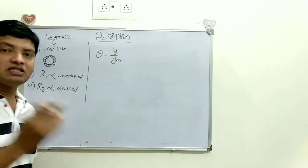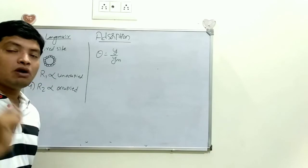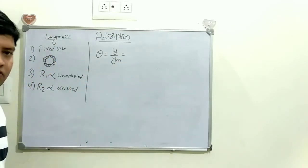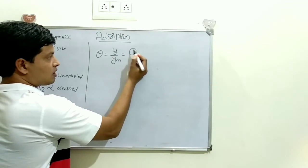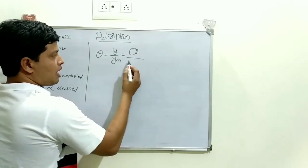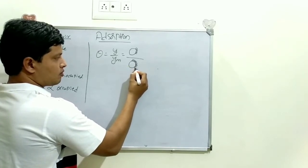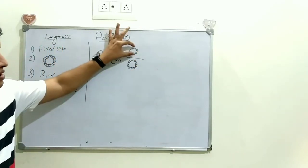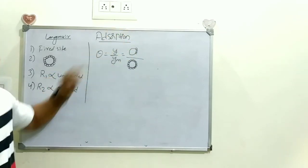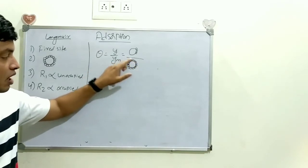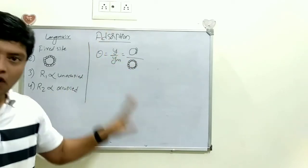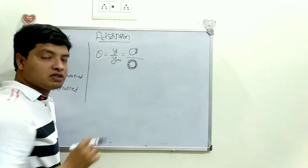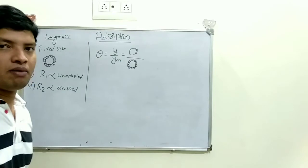Theta is the fraction of sites adsorbed, meaning y divided by ym. Here, y is the amount of gas adsorbed per unit mass of adsorbent, and ym is the amount of gas adsorbed per unit mass of adsorbent when the monolayer is completely formed. So ym represents the maximum adsorption when a full monolayer covers the charcoal particle.